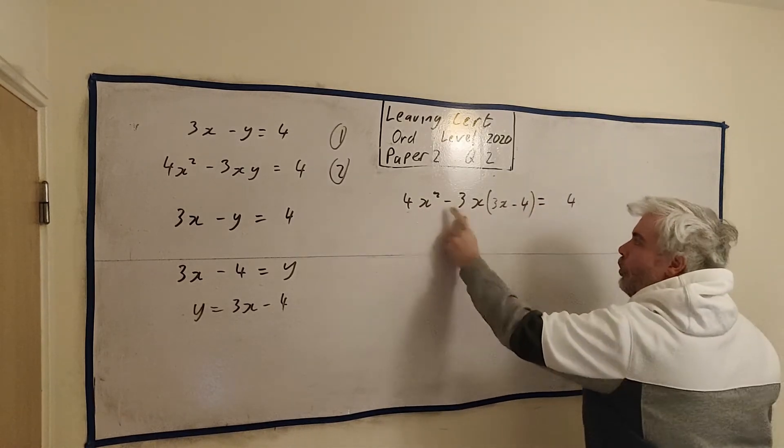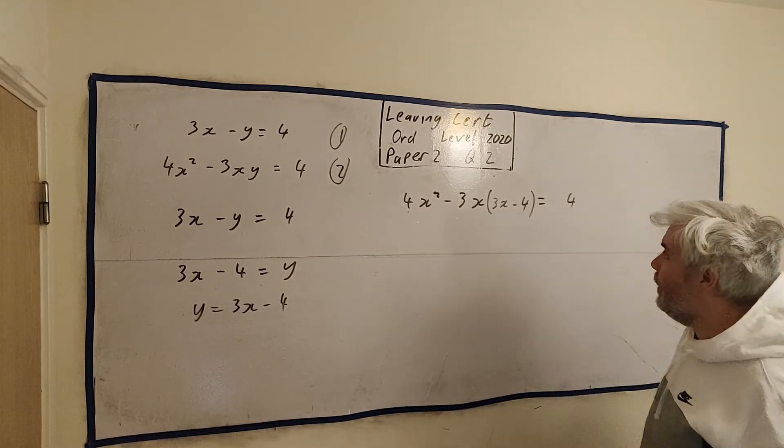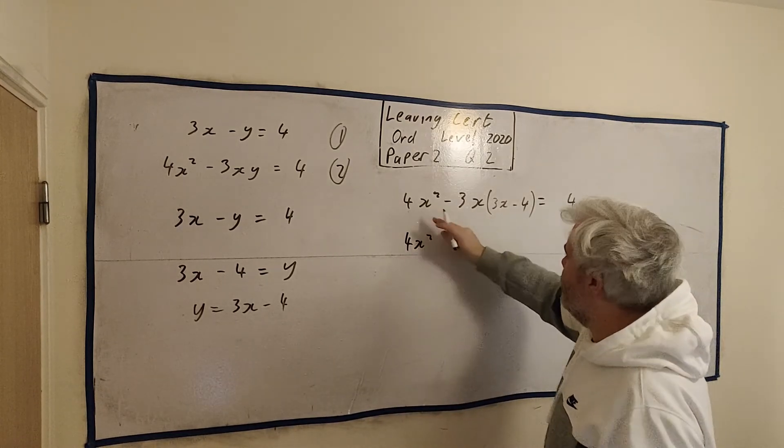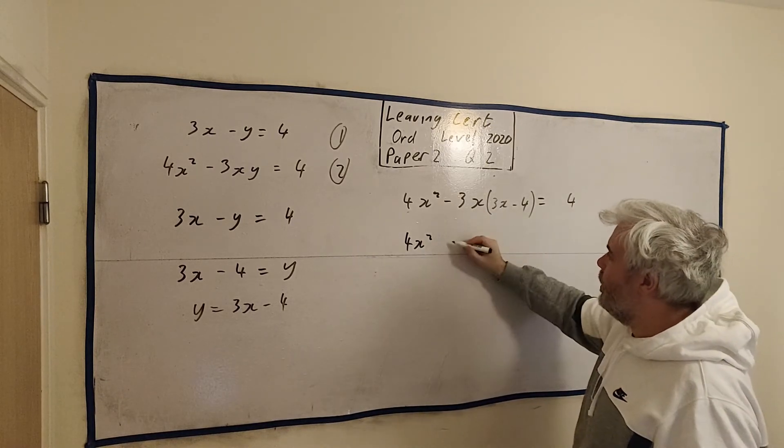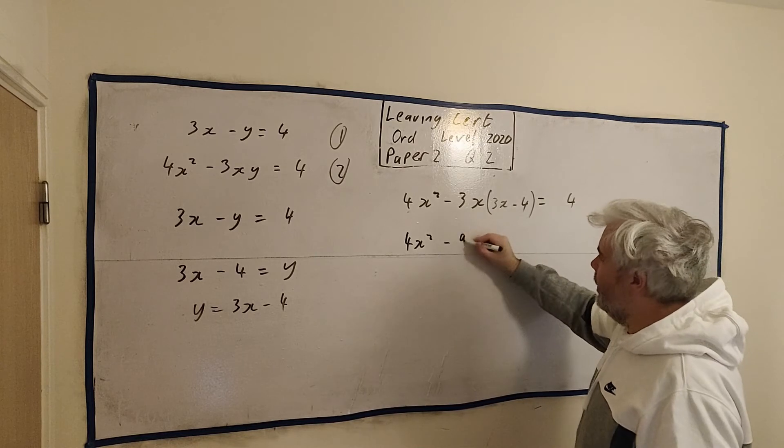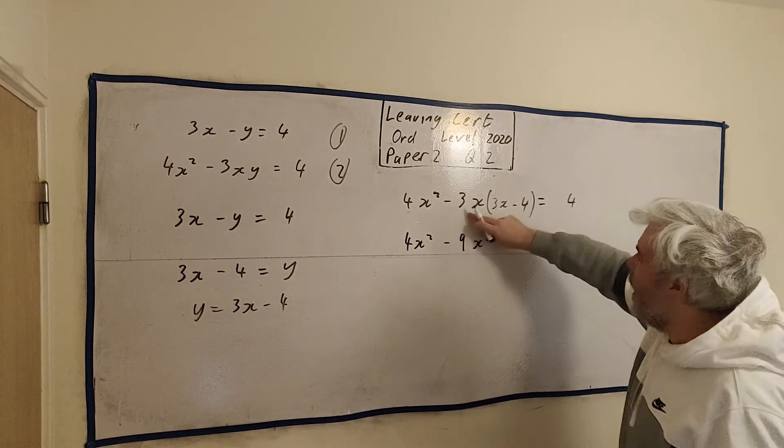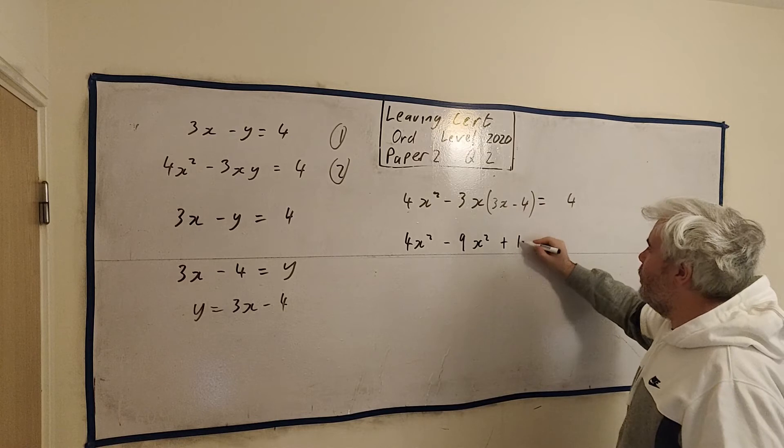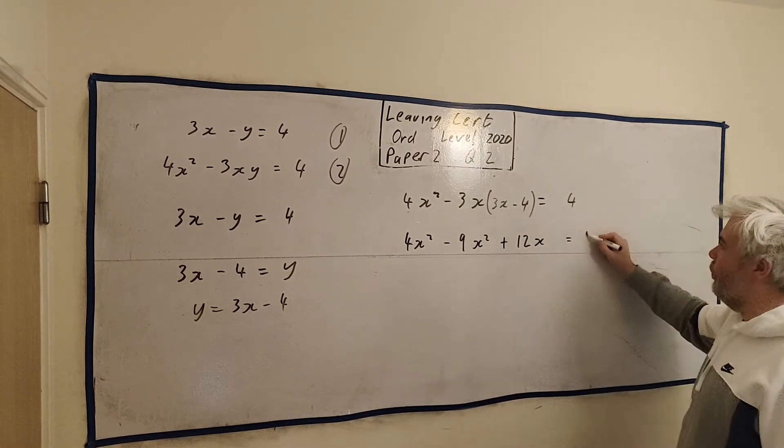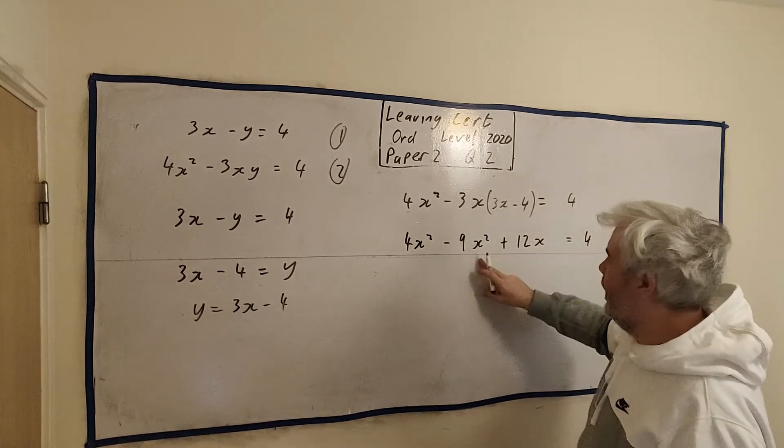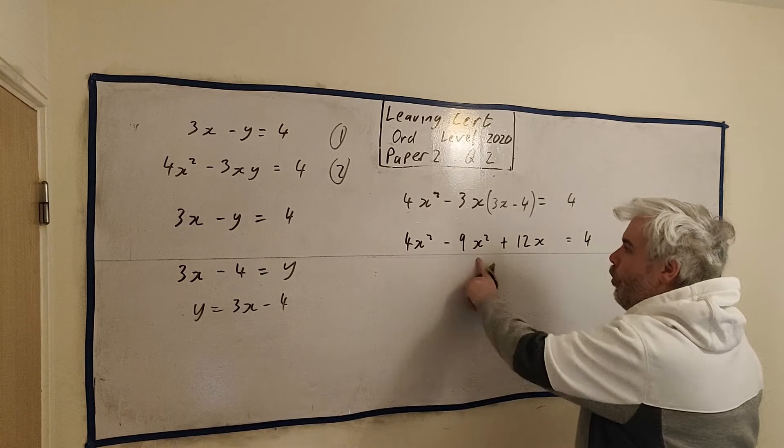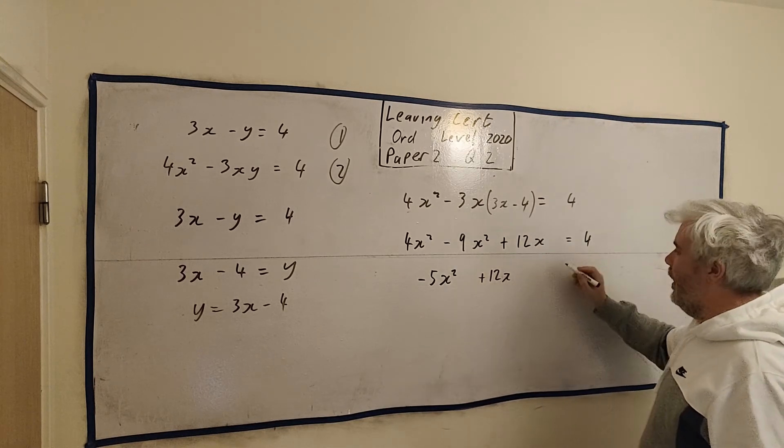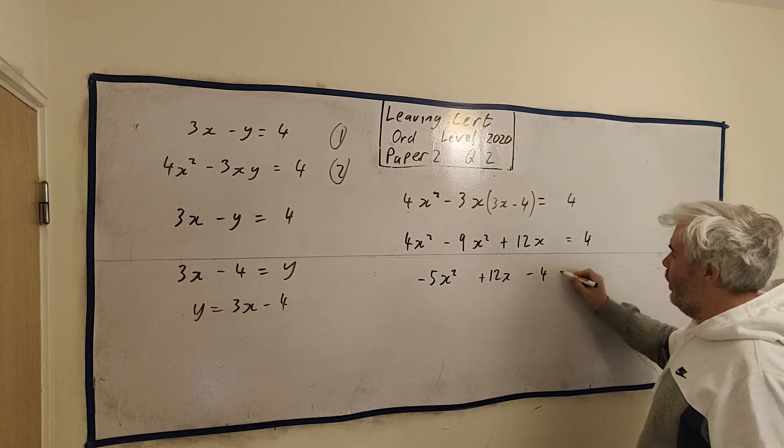It might be a little complicated, but it's still one thing we don't know. Let's start multiplying out the brackets here. We get 4x squared hasn't changed. Now minus 3x times 3x, we get minus 3 times 3, we get a 9. And x times x, we get x squared. Now minus 3x times minus 4, minus by minus we get a plus. 3 times 4, we get a 12, and there's an x. This is equal to 4.